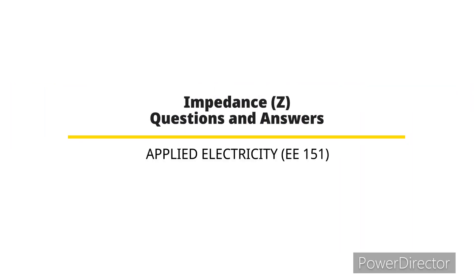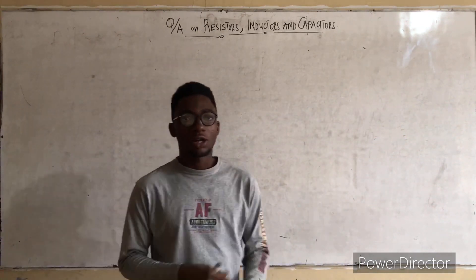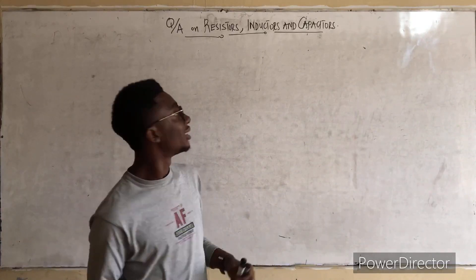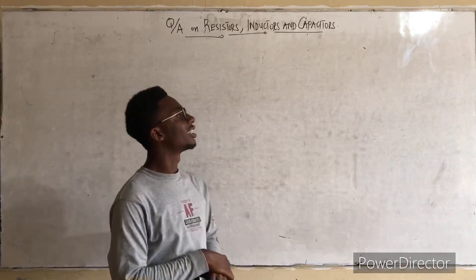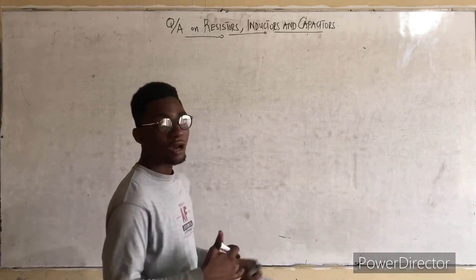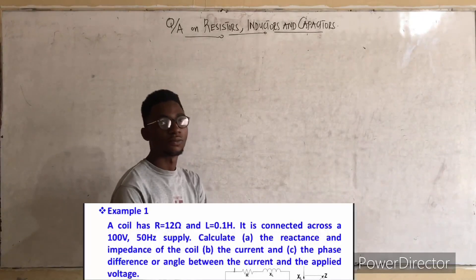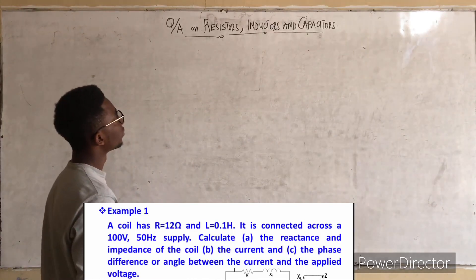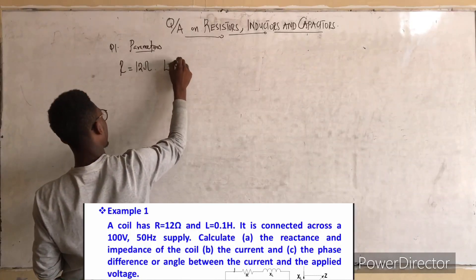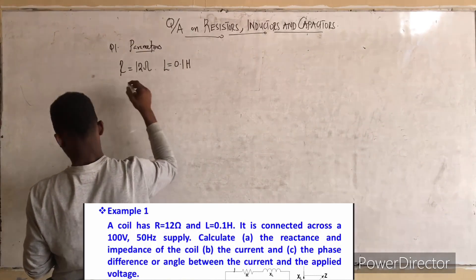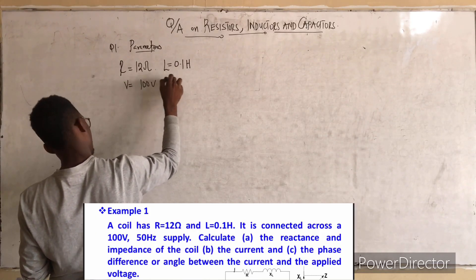Welcome to today's class, which is a simple questions and answers session on impedance — that is, resistive, inductive, and capacitive elements. Let's take the first question together. A coil has R = 12 ohms and L = 0.1 henry, and is connected across 100 volts at 50 Hz supply. Calculate: (a) the reactance and the impedance of the coil, (b) the current, and (c) the phase angle between the current and the applied voltage.